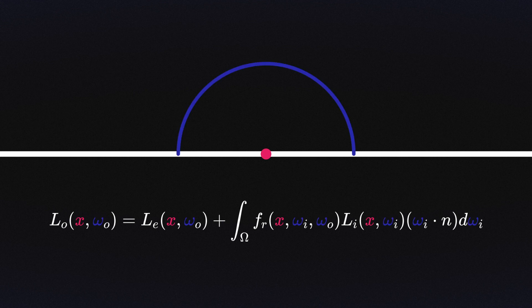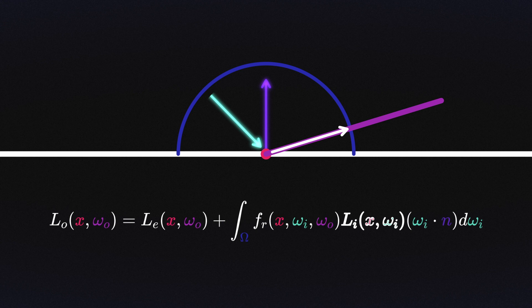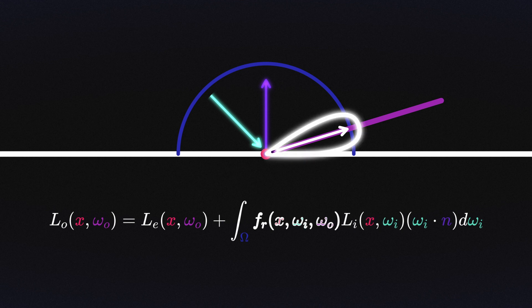We have the intersection point x. The lowercase omegas represent unit directions in the hemisphere, which itself is denoted with the uppercase omega. The normal is just n, so on the left we have the light outgoing from the point x in the outgoing direction omega_o, which is the negation of the direction of the incoming ray. This is equal to the light emitted from the point x in the outgoing direction omega_o plus the integral over every incoming direction omega_i in the hemisphere omega of the incoming light to the intersection point x from the incoming direction omega_i, weighted by the BRDF f_r of the incoming and outgoing directions at the point x. This value is weighted by the dot product of the incoming direction with the normal, Lambert's cosine law.